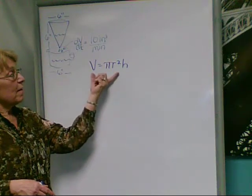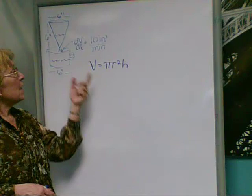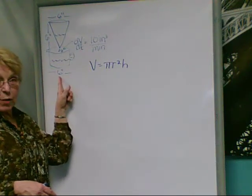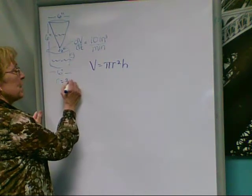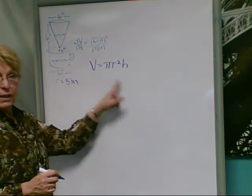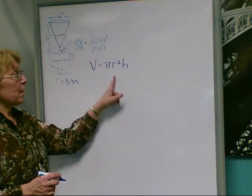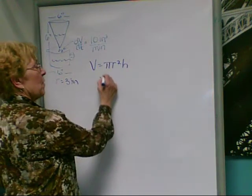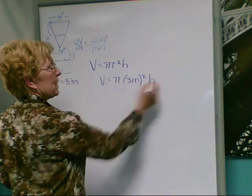We know that the volume of the carafe is that of a cylinder. And given that its diameter is 6 inches, we would know that the radius then would be 3 inches, which we can put into this formula. So volume is pi times 3 inches quantity squared times height.